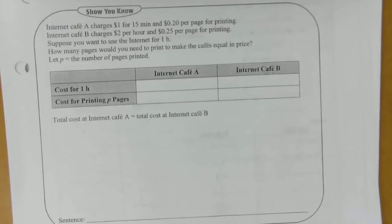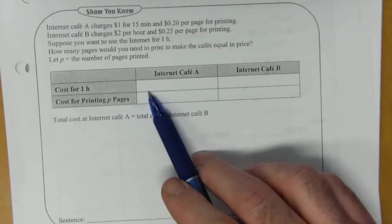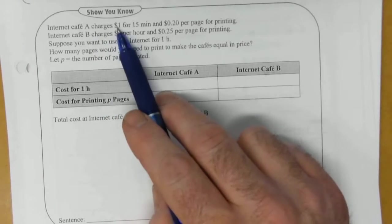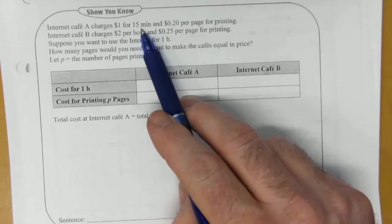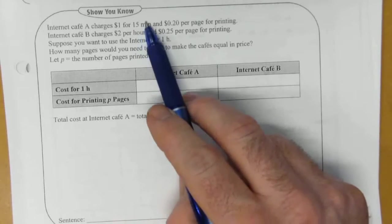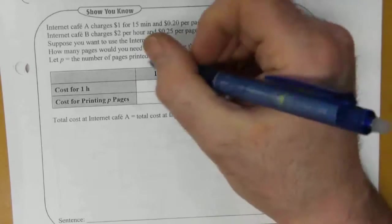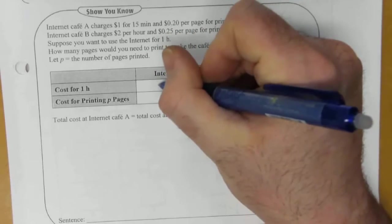So we've got a table to summarize the information first. So the cost for one hour at cafe A, well 15 minutes is a quarter of an hour. So for one hour that's going to be four times this. So it's going to be four dollars.